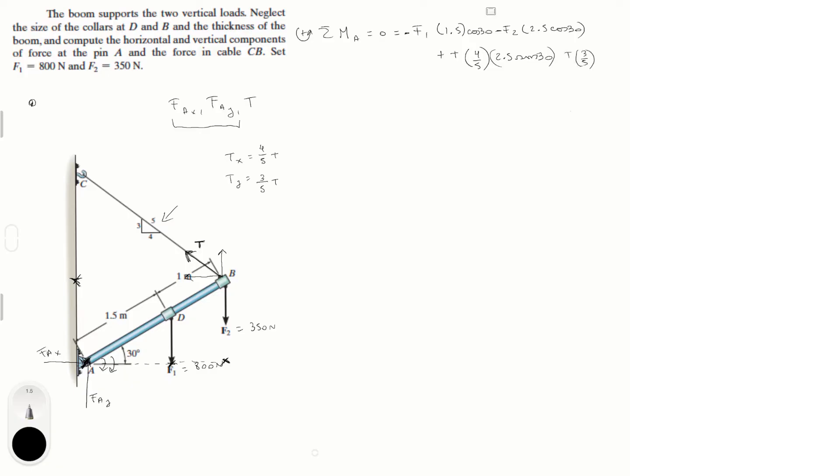And then the y component, you have to multiply it by T times 3 over 5. You have to multiply it by the same distance that we did before to calculate f2, which is the distance from here to A, which is equal to 2.5 cosine of 30. And this is positive because it's trying to turn it counterclockwise, and the x component is also positive because it's trying to turn it counterclockwise.